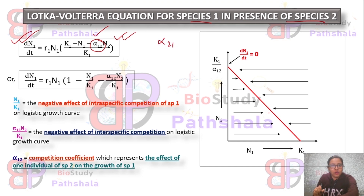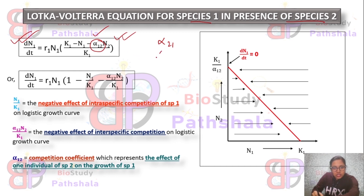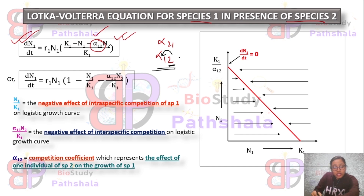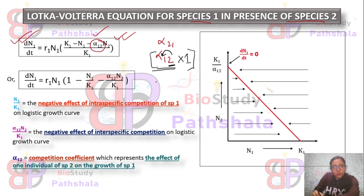α12 is the competition coefficient. It represents the effect of one individual of species 2 on species 1. If the population size of species 2 is N2, then the cumulative effect of species 2 on species 1 is N2 × α12. This term captures the inter-specific competitive effect of species 2 on the growth of species 1.